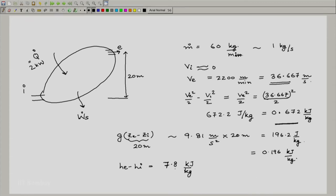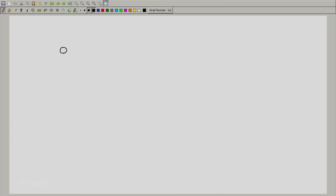Q dot is of the same order as h e minus h i. It is 2 kilojoule per second and if we divide it by 1 kilogram per second, you realize that it is of the same order. Let us just write down the first law now.